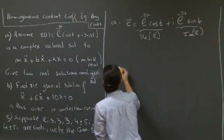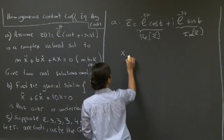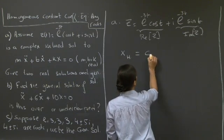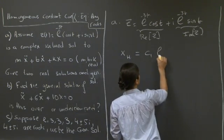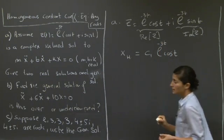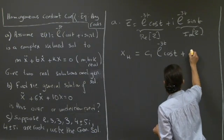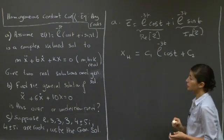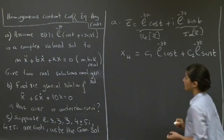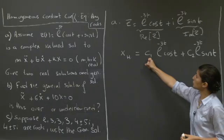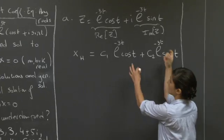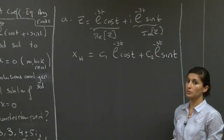The general solution to this differential equation can then be written as one undetermined constant times e to the minus 3t cosine t, plus another undetermined constant times e to the minus 3t sine t — a linear combination of two linearly independent solutions taken directly from the real and imaginary parts of the original complex number we were given.